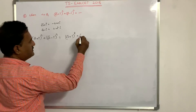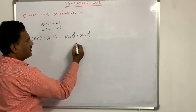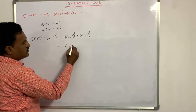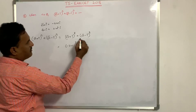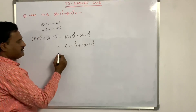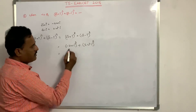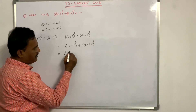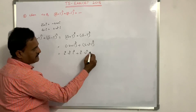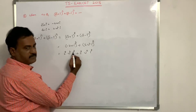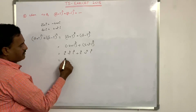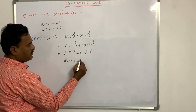The expression becomes (minus 2 omega i) to the power 8 plus (2 omega squared i) to the power 8. That is (minus 1) to the power 8 times 2 to the power 8 times omega to the power 8 times i to the power 8, plus 2 to the power 8 times omega to the power 16 times i to the power 8. Since i to the power 8 equals 1, taking 2 to the power 8 common gives omega to the power 8 plus omega to the power 16.